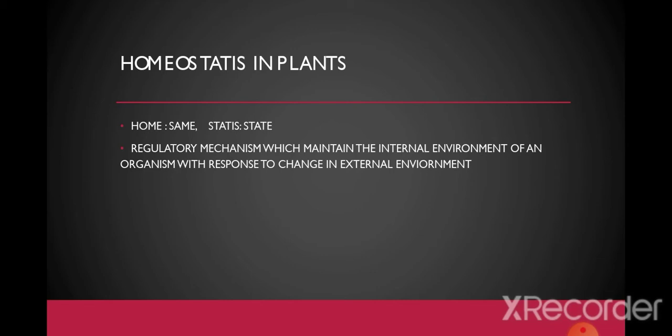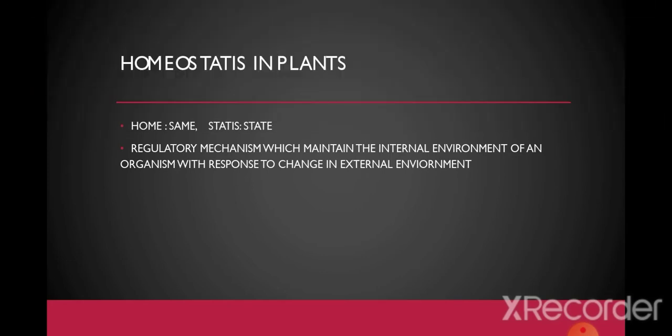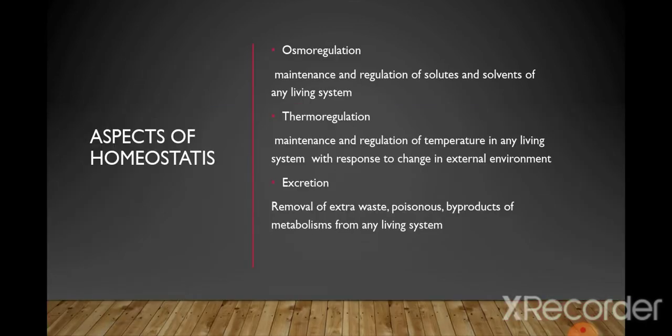There are different ways to remove these metabolic waste substances, gases, and water; this process is collectively called excretion. When a plant is maintaining solutes and solvents it is called osmoregulation, and when a plant is maintaining temperature it is called thermoregulation. There are three aspects of homeostasis: number one, osmoregulation; number two, thermoregulation; number three, excretion.